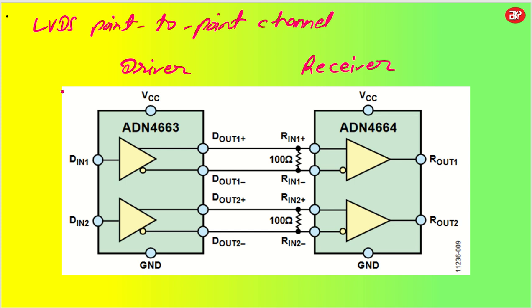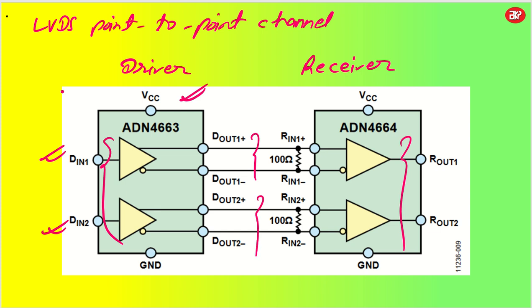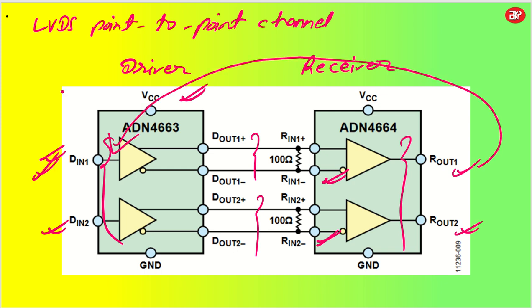If you talk about driver and receiver, we have ADN4663 which has two drivers and ADN4664 which has two receivers. We have two signals going into data in one and data in two, and we have two differential signal outputs — D out plus one and D out one minus, and D out two plus and D out two minus. These two can be sent to your receivers, and the receiver gives you outputs R out one and R out two, similar to the data in. So data in will be going to data out by utilizing your two LVDS — one is your driver and one is your receiver.